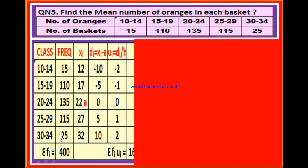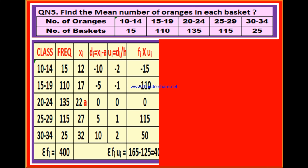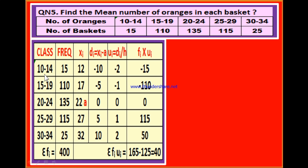After writing the frequencies, since we are finding arithmetic mean, the third column is for mid-value or class mark. The mid-value of a class is the average of the lower and upper boundaries. For 10–14: 10 plus 14 is 24, divided by 2 is 12. For 15–19: 15 plus 19 is 34, divided by 2 is 17. For 20–24: 20 plus 24 is 44, divided by 2 is 22. For 25–29: 25 plus 29 is 54, divided by 2 is 27. For 30–34: 30 plus 34 is 64, divided by 2 is 32. These are the mid-values.